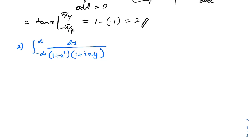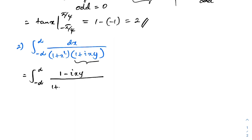Since we have a complex number, as a first step I am going to multiply by the conjugate of the complex number, which is (1 - ixy). So in the numerator we get (1 - ixy), and the denominator becomes (1 + x²) times (1 + ixy)(1 - ixy).